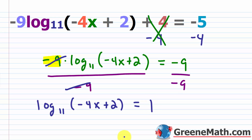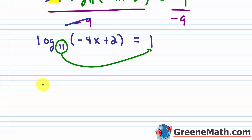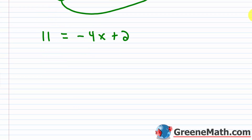Let's scroll down and get some room. Now I'm going to write this in exponential form. I'm going to take this base here and raise it to this 1. So we have 11 to the first power, and this will be equal to negative 4x plus 2. Now, 11 to the first power is just 11, so you can erase that if you want. Basically, you just want to solve this very simple equation to get our solution.